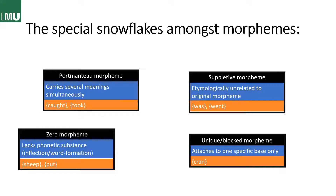And then we have the zero morpheme, which lacks phonetic substance when a word is inflected or has another word form. One example would be 'sheep,' whose plural is also 'sheep' — there should be a plural -s, but there is none. Or 'put,' 'put,' 'put' — present, simple past, and past participle without any marking.